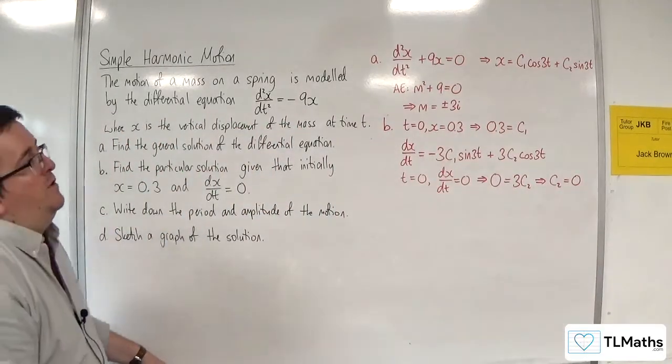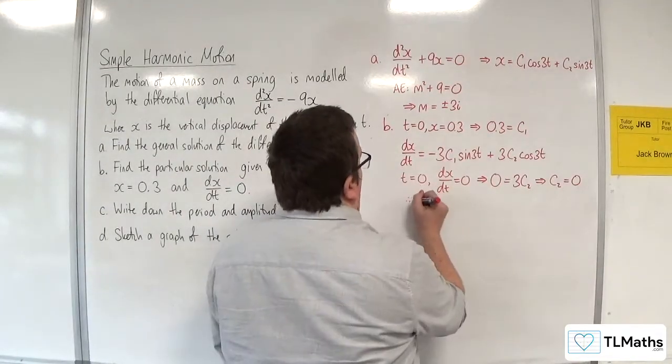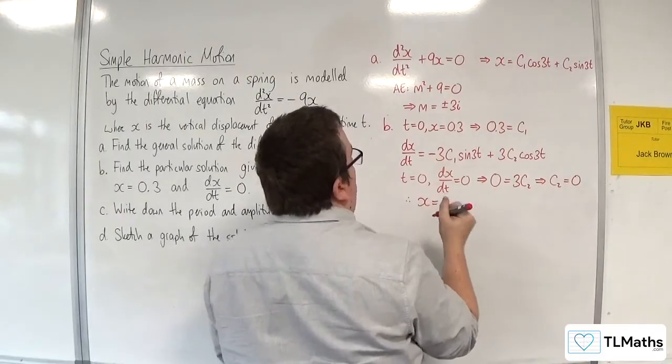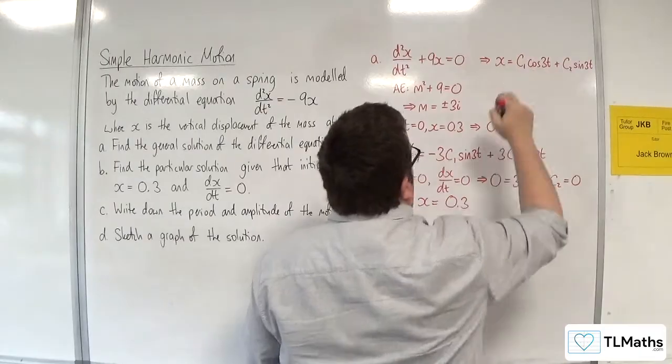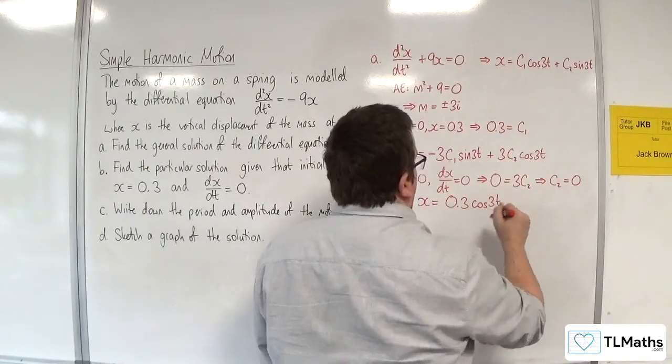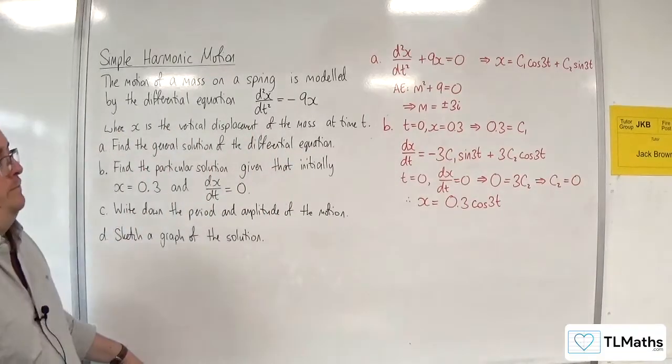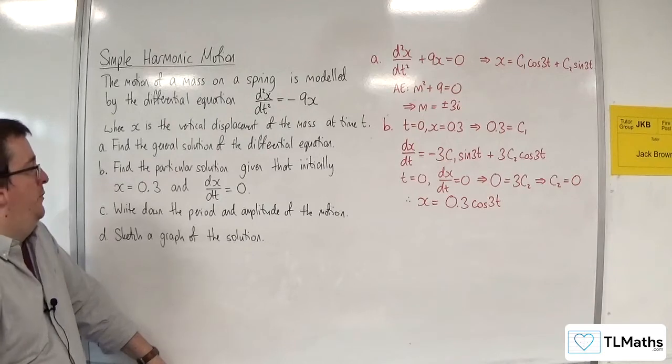Okay, so that means that, therefore, x is equal to c1, which is 0.3, cosine of 3t. Okay, so that's it. There isn't that sine of 3t part on there.